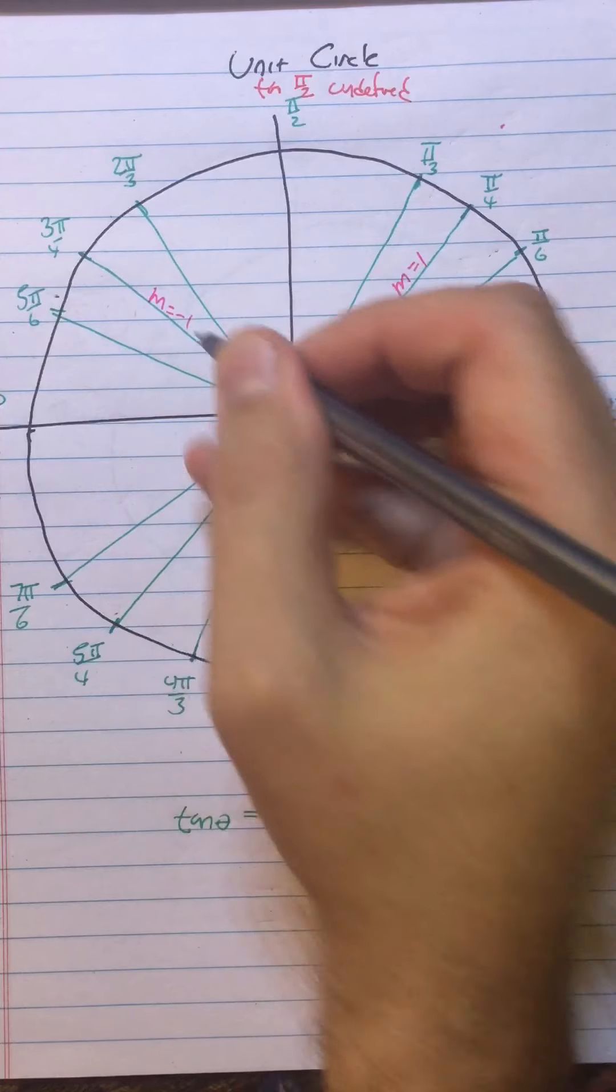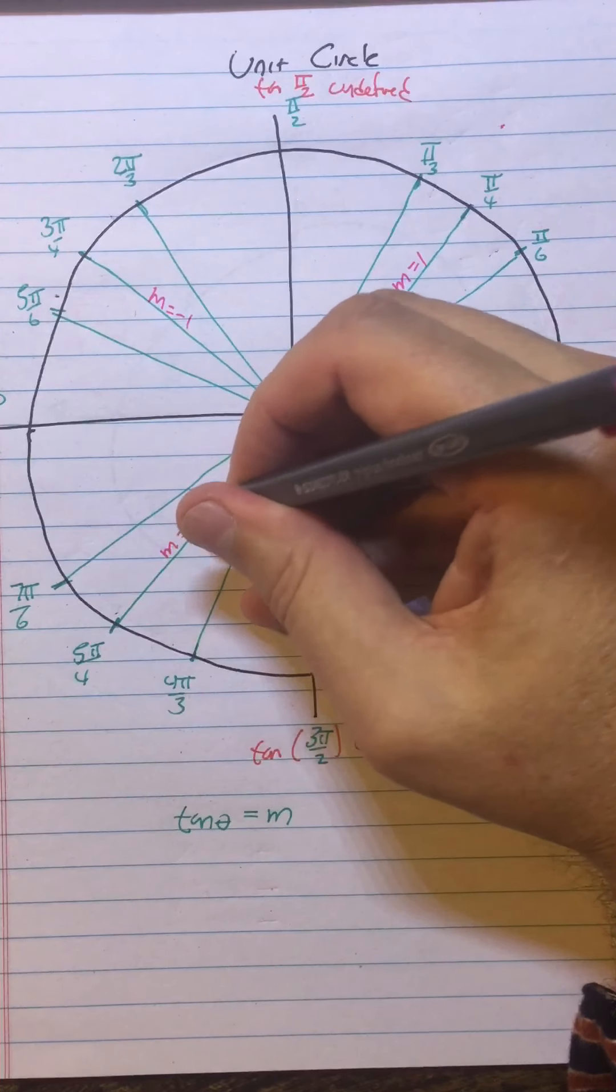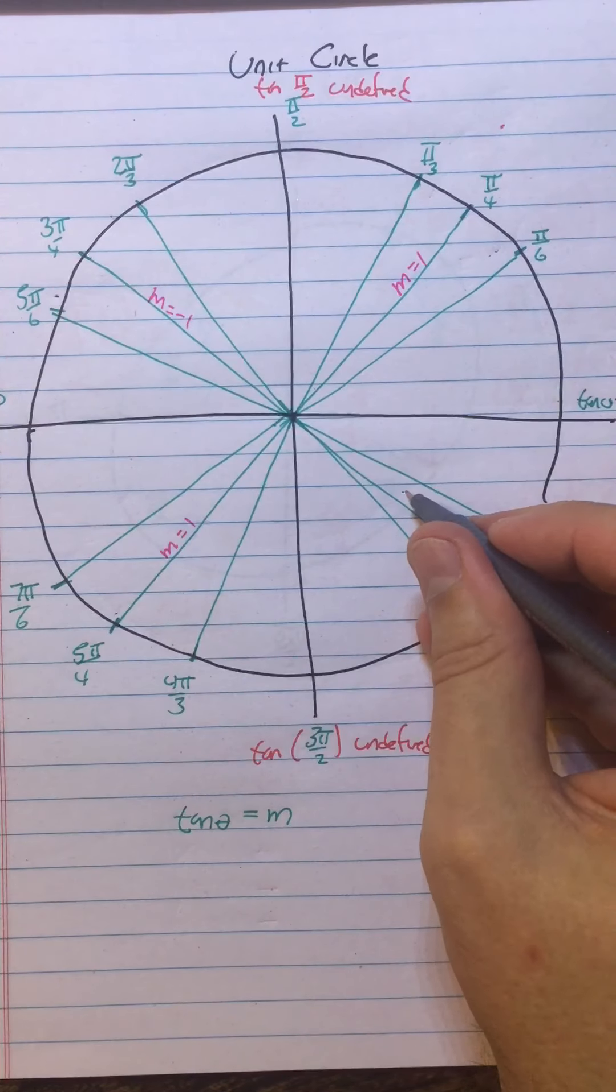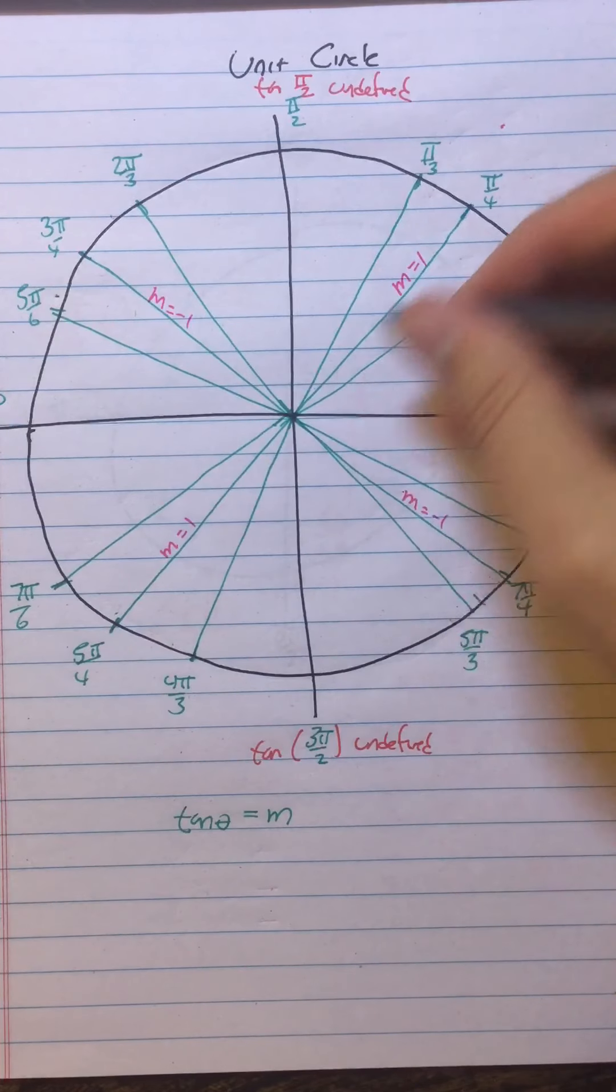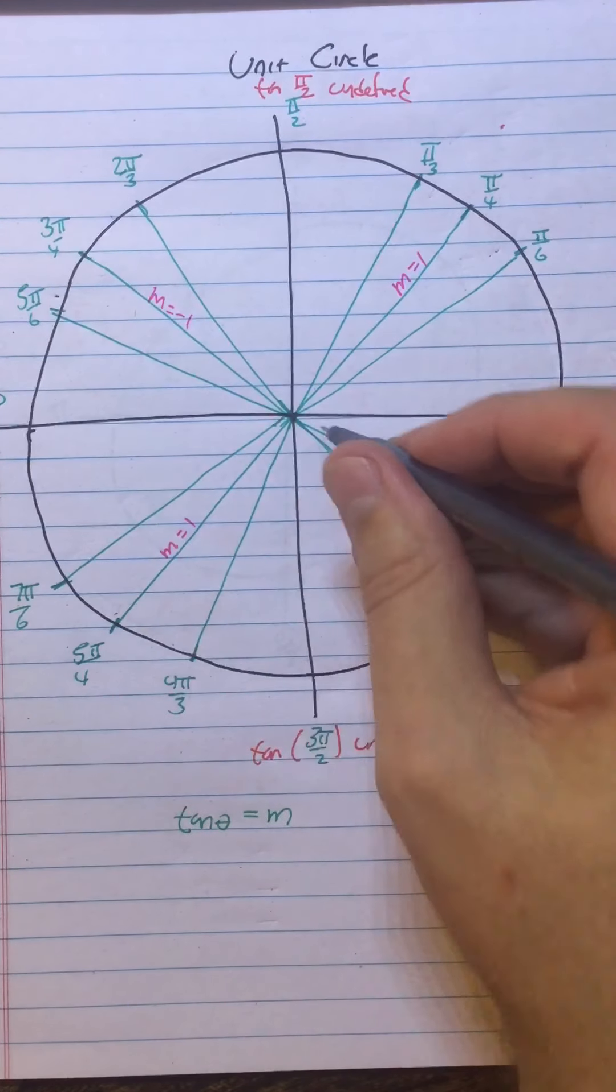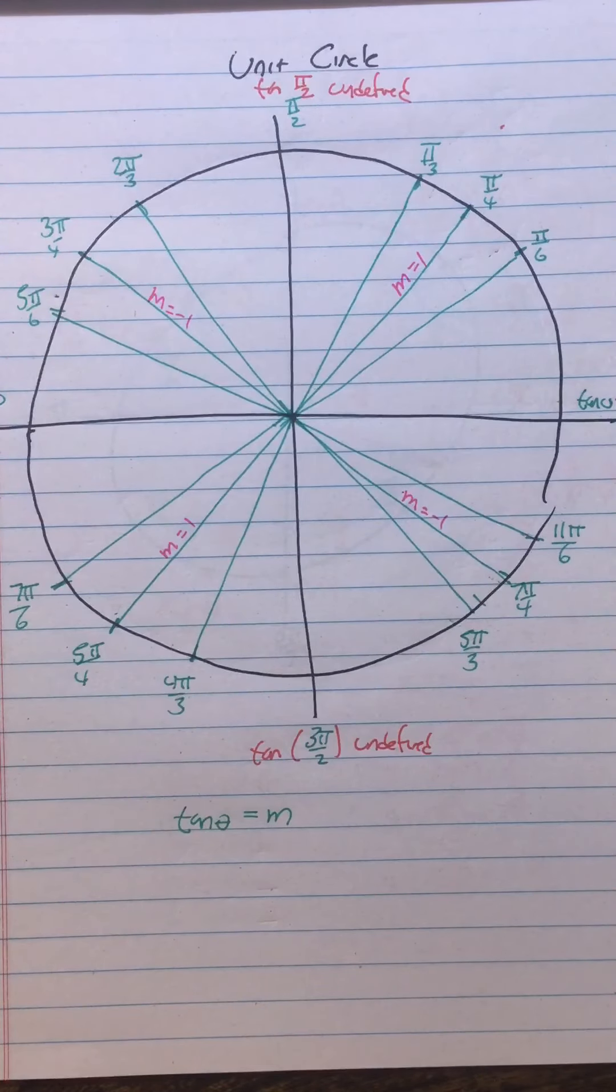The tangent of 3π/4 is -1. The tangent of 5π/4 is 1. The tangent of 7π/4 is -1, because that's slope 1, slope -1, slope 1, slope -1.